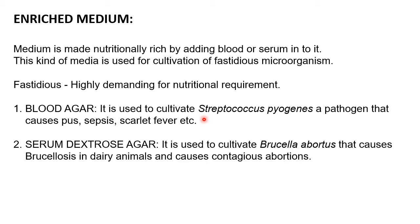Examples of enriched media are blood agar, which is used to cultivate Streptococcus pyogenes, a pathogen that causes pulp sepsis and scarlet fever. Another example is serum dextrose agar, used to cultivate Brucella abortus, which causes brucellosis in dairy animals and leads to contagious abortions.